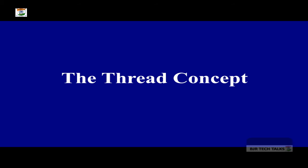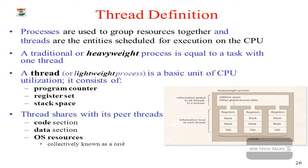Most modern operating systems are capable of maintaining multiple threads within a process, making use of the multithreading concept. A thread is a basic unit of CPU utilization — this is the standard definition we should remember. A thread is the smallest or atomic job within a process.